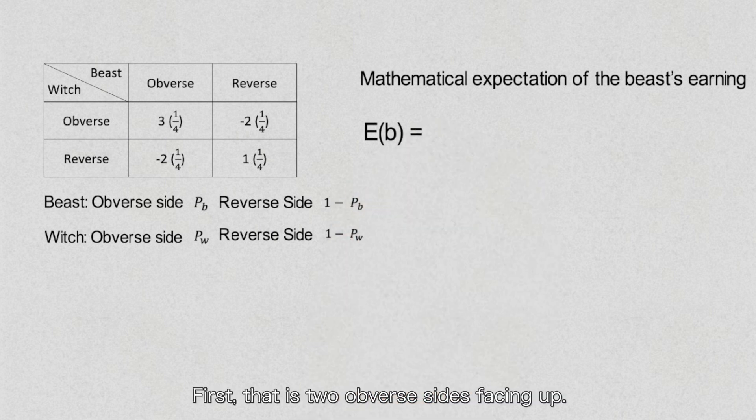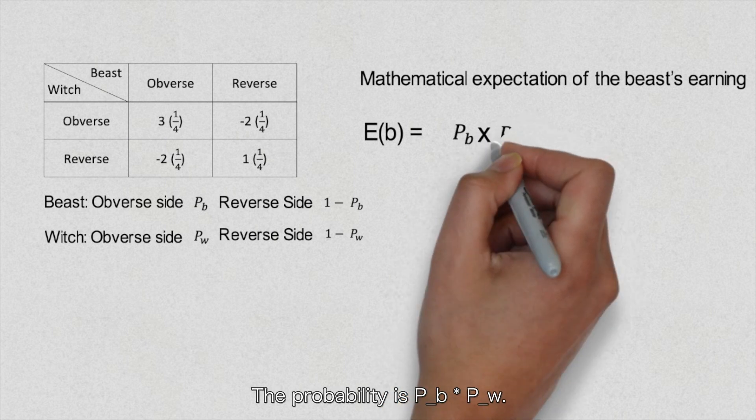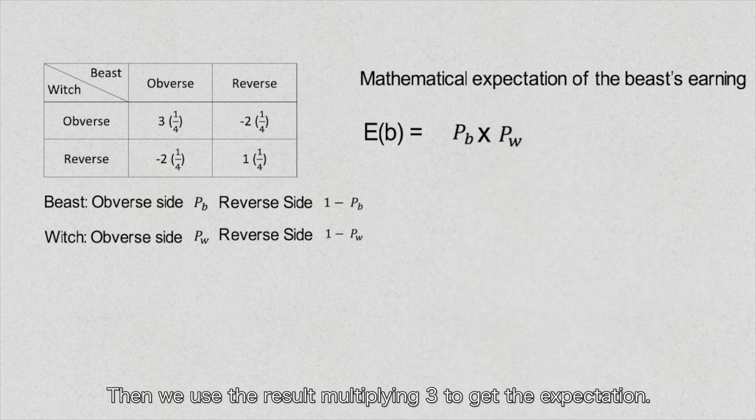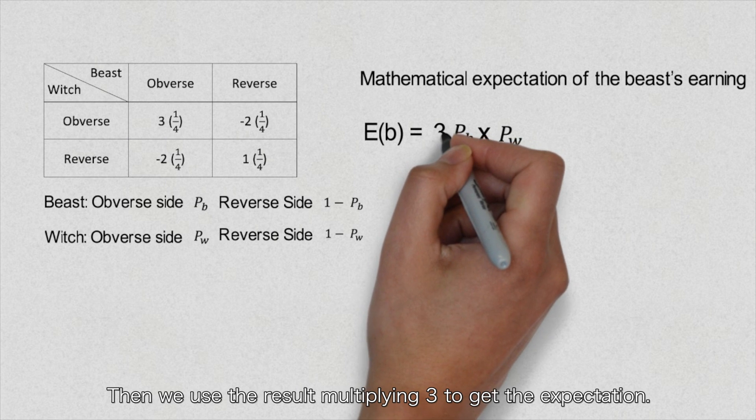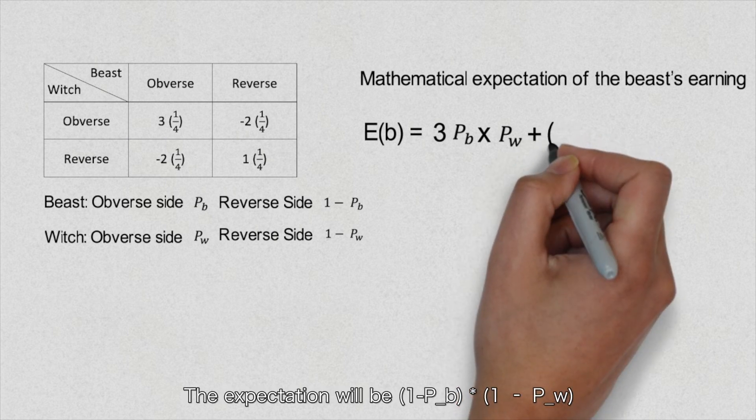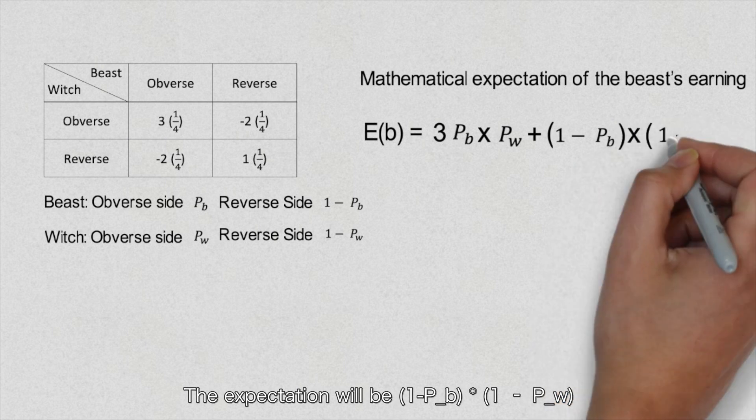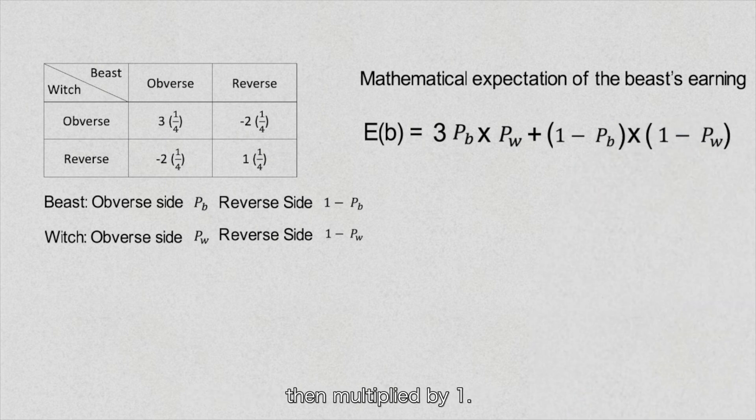The game can have four outcomes. First, two obverse sides facing up. The probability is P_b times P_w. Then we use the result multiplying 3 to get the expectation. Second, the beast earns $1 when the two reverse sides are facing up. The expectation will be 1 minus P_b, multiplying by 1 minus P_w, then multiply by 1.